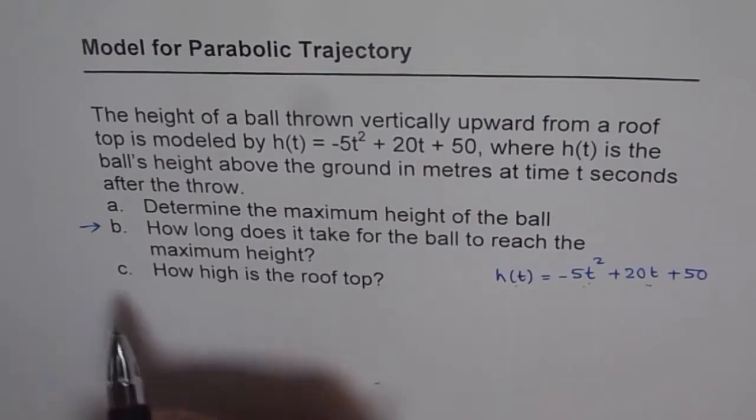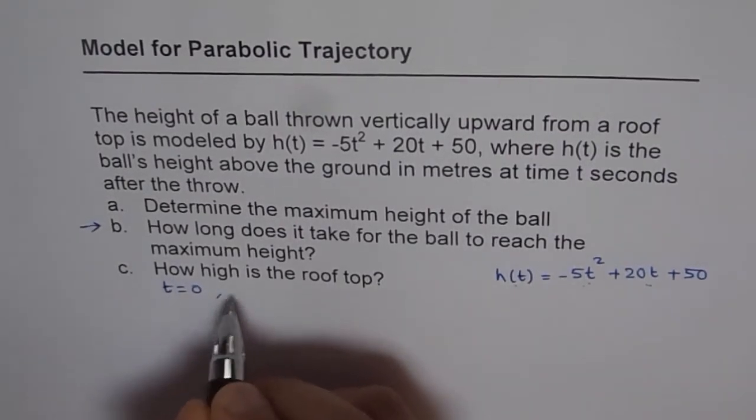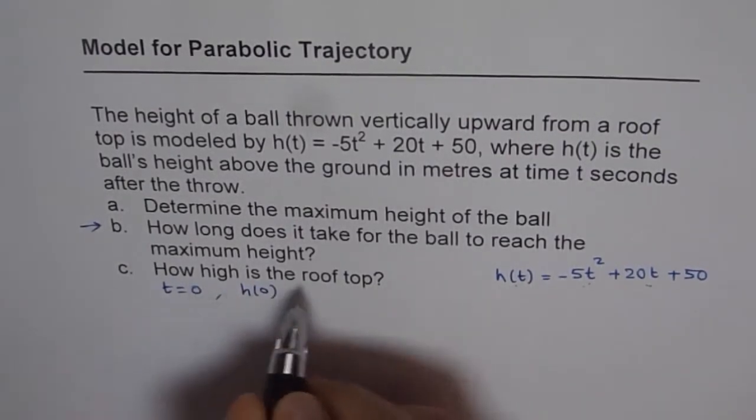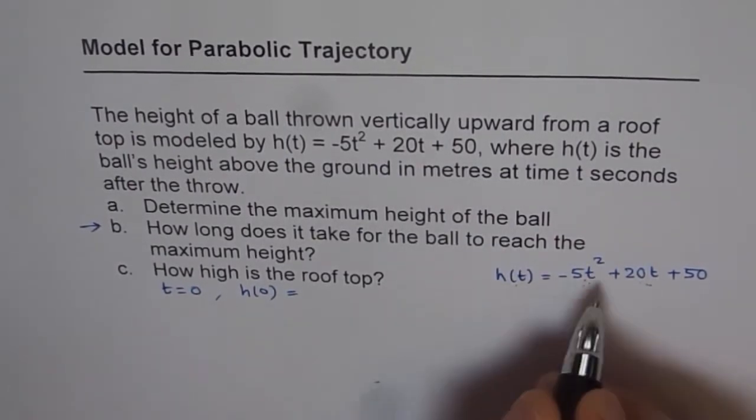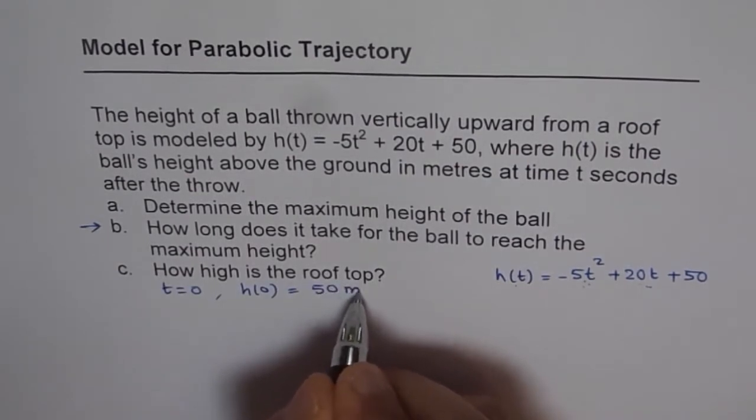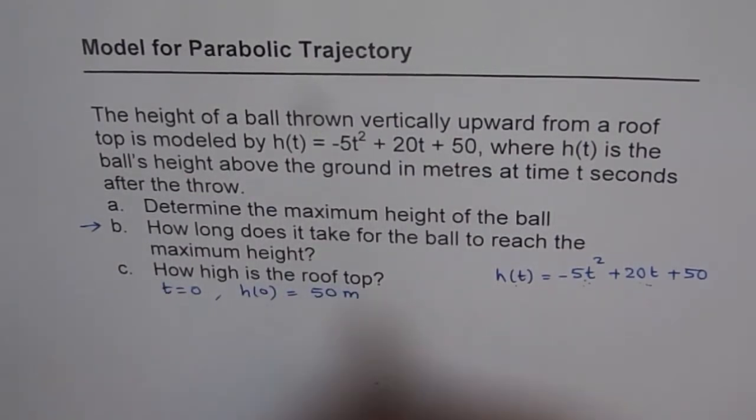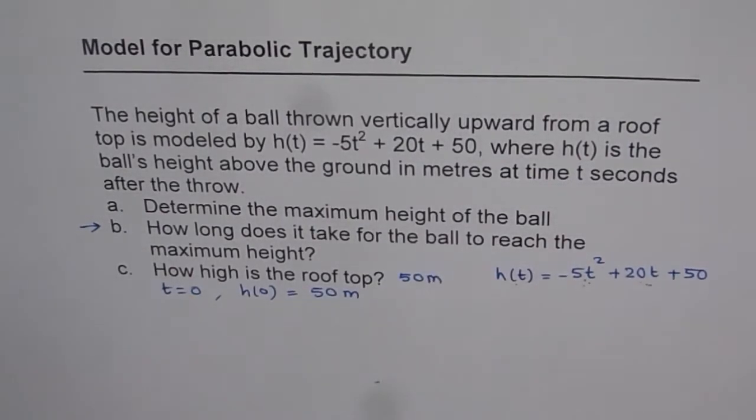Let's start with part C and move upwards. For part C, I have to put t equals 0 and find height. So h(0) gives me rooftop, which is 0 plus 0 plus 50. If I plug in 0 here, I get 0. So basically, I get 50 meters and therefore, the height of the rooftop is indeed 50 meters. That is my first answer.